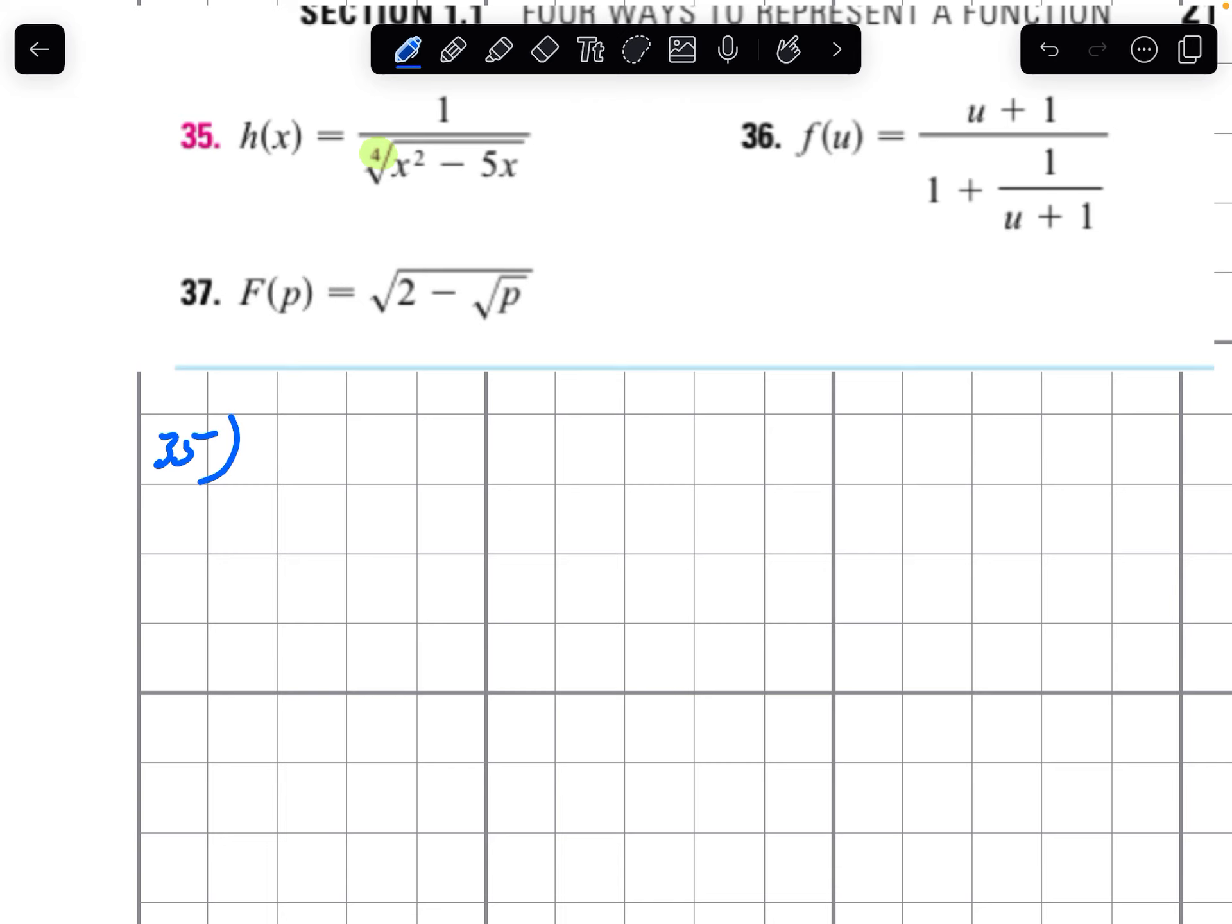So we have a couple of things we're worried about here. We're worried about when the 4th root of x squared minus 5x. We don't want it to be less than 0. Not the 4th root, but the actual. If that's less than 0, the 4th root doesn't work.